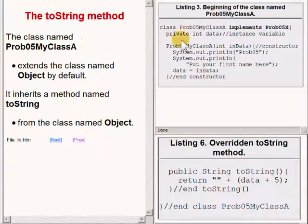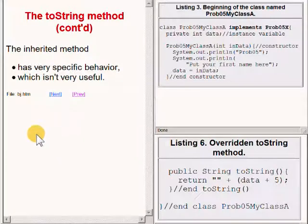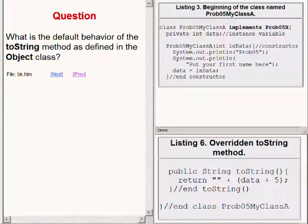The class name prob05x extends the class named Object by default. Therefore, it inherits a method named toString from the class named Object. The inherited behavior of the toString method is very specific, but it isn't very useful. So here is a question for you: what is the default behavior of the toString method as defined in the Object class?